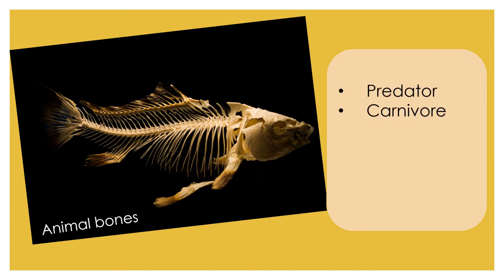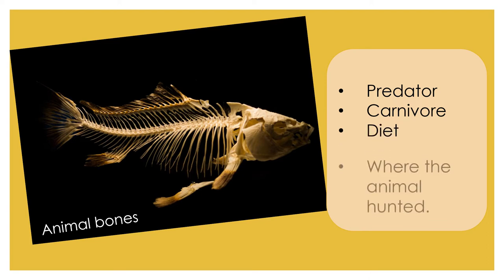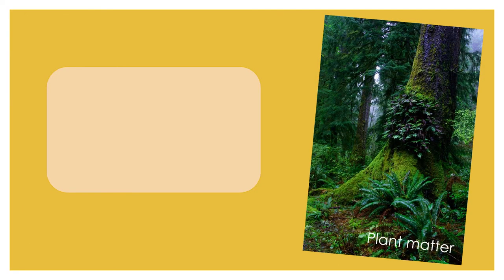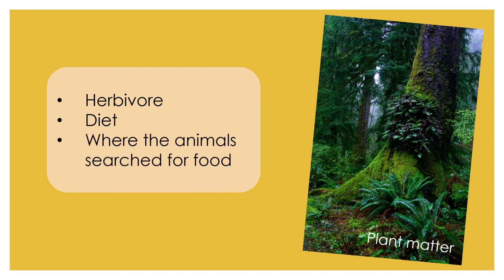We would also have an idea of the food the animal ate and possibly clues as to where this animal hunted. A coprolite with plant matter inside would suggest this animal was a type of herbivore. Again, we could find out about the different types of food this animal ate and possibly where this food came from.